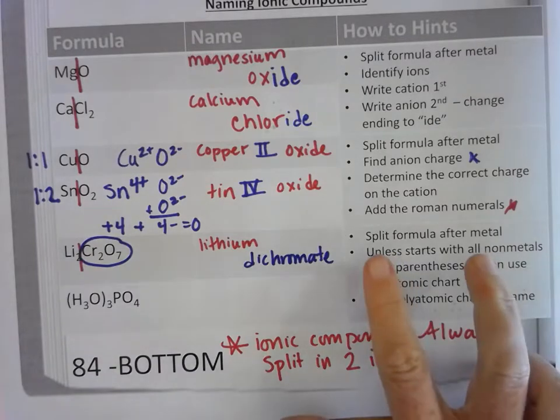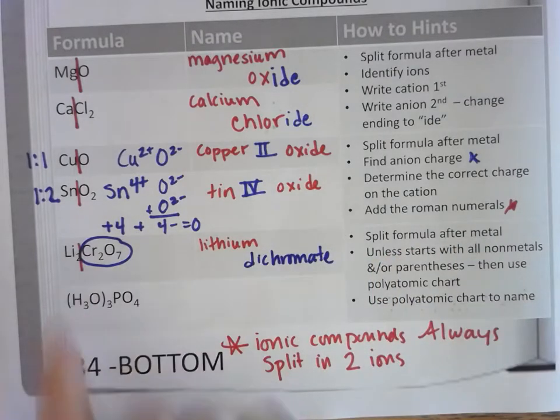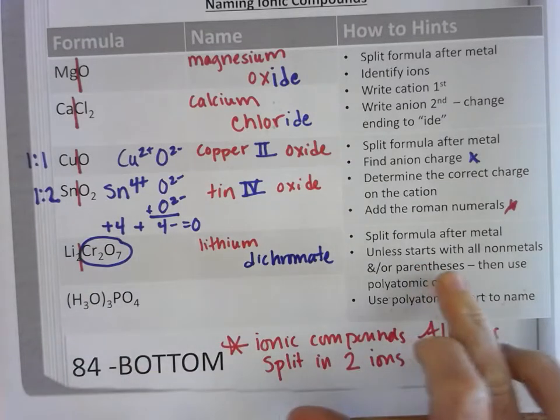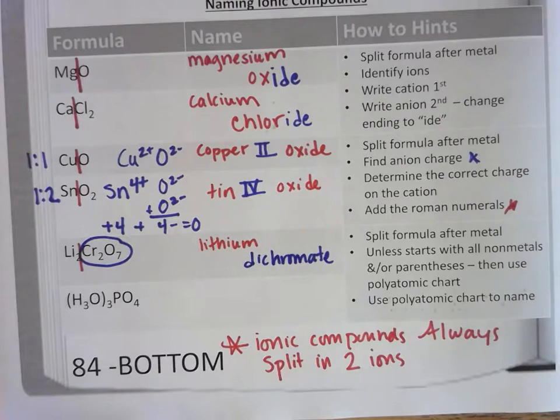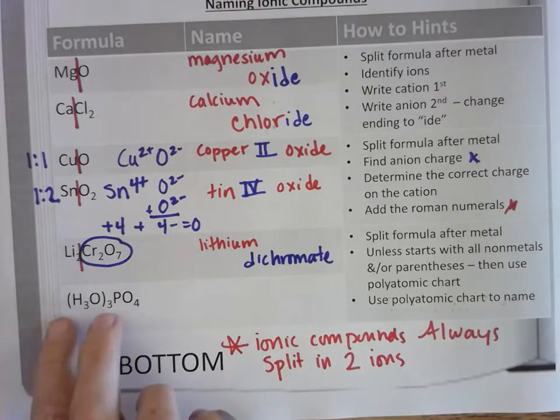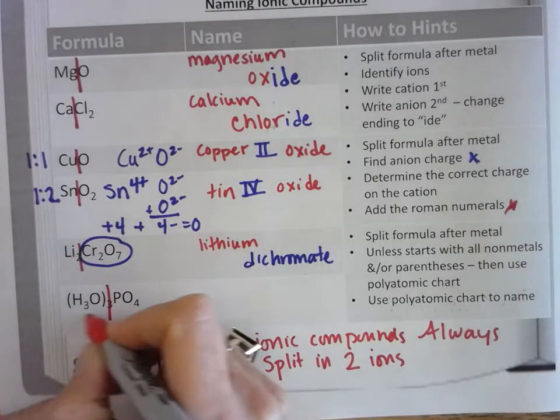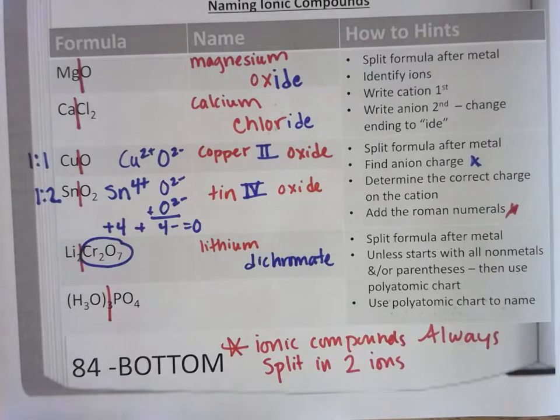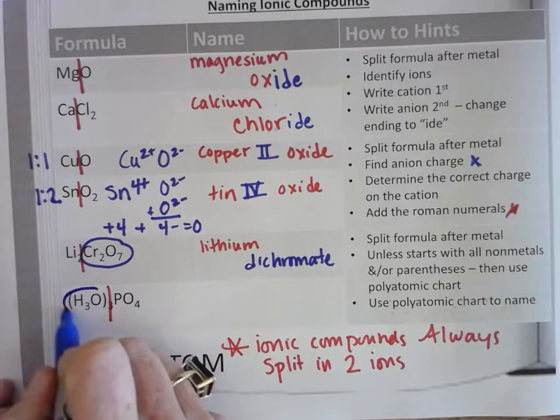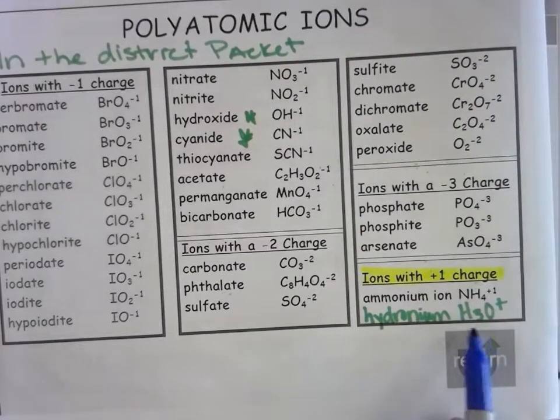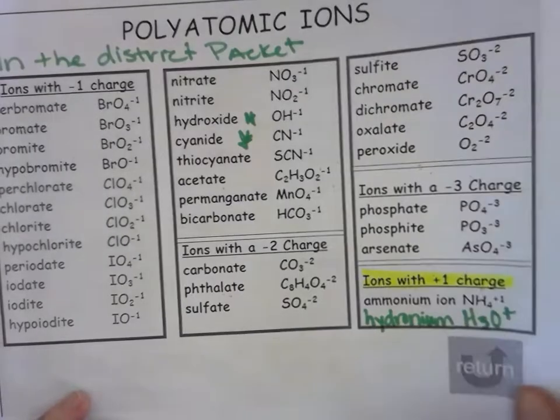So now it's that type. Now it tells me to split the formula after the metal and I had a metal. Unless the formula starts with all non-metals and/or parentheses, then we're going to use our polyatomic ion chart. So look, it's starting with parentheses. So I'm going to split it here and still everything on this side is one thing. It is made up of more than one atom. So I'm going to go to my chart and look for H3O plus. I knew to go down here because the first one's always positive. Hydronium it is.